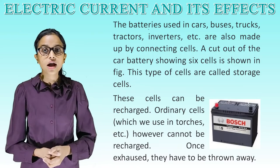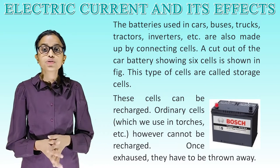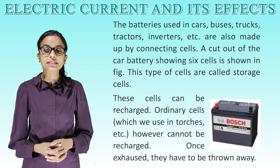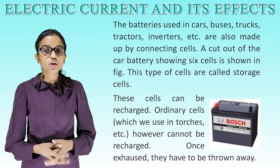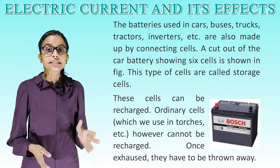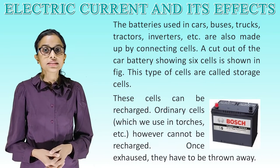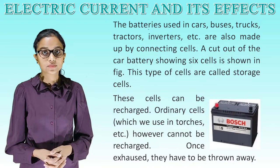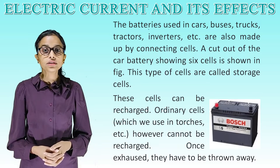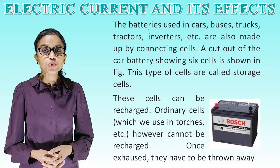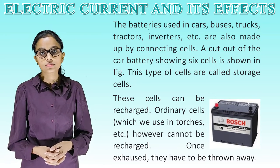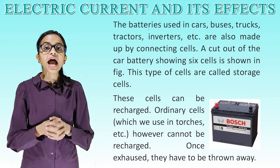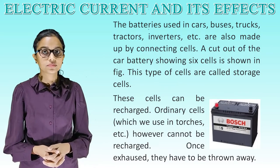The batteries used in cars, buses, trucks, tractors, inverters, etc. are also made by connecting cells. A cutout of a car battery showing six cells is shown in the figure. These types of cells are called storage cells. Storage cells can be recharged, whereas ordinary cells, which we use in torches etc., cannot be recharged. Once exhausted, they have to be thrown away.